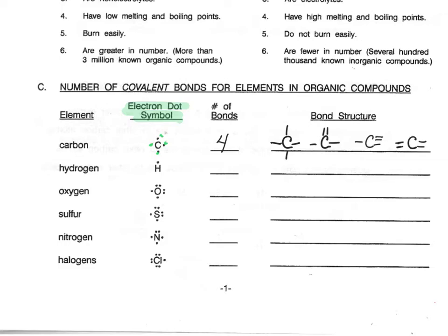Next, let's look at hydrogen. Hydrogen has only one electron, so there is only one dot on the Lewis dot symbol, and that means that there is only one bond formed for hydrogen. That bond can go in any of the four directions, but there is only one bond.